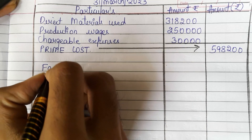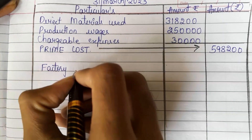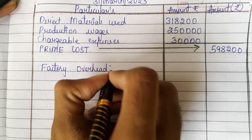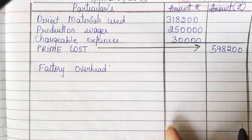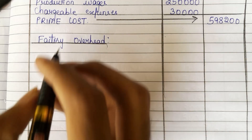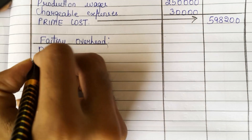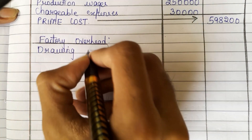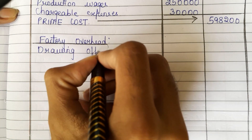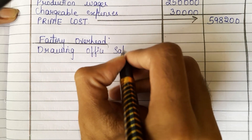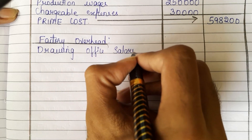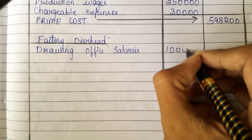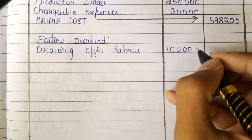We need to add factory overhead. The factory overheads we have are: drawing office salaries — 10,000 rupees.